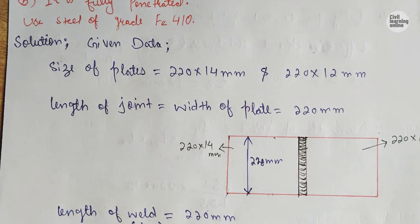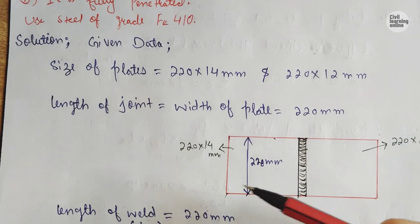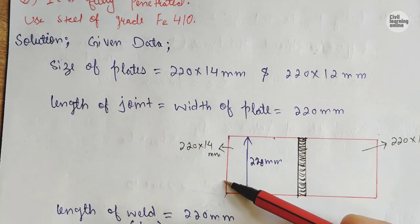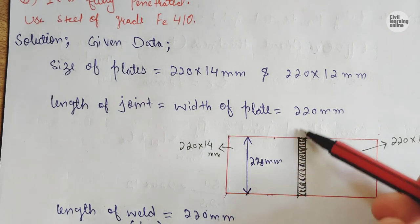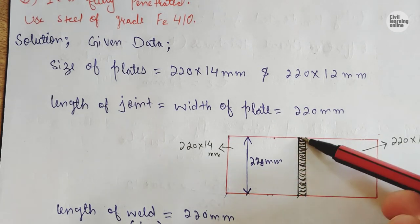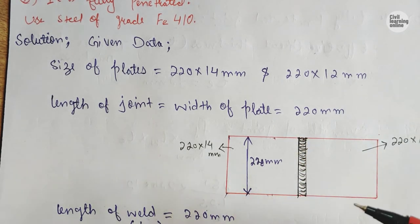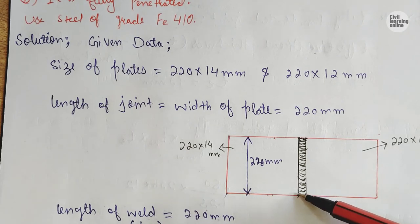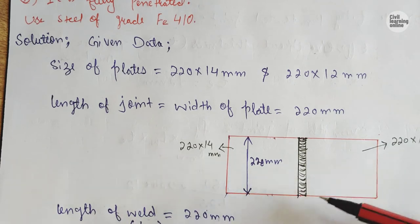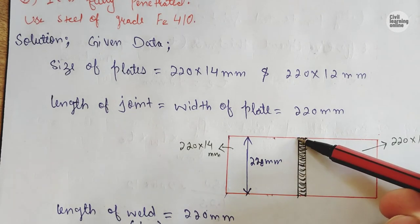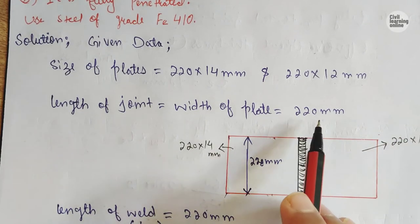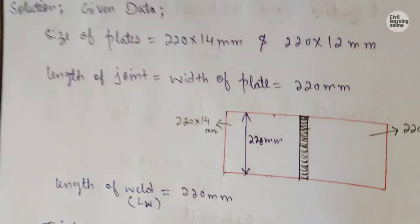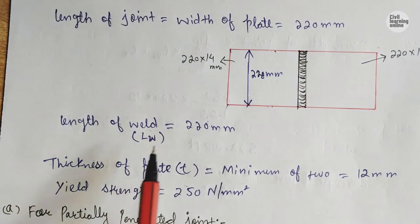Now we have to find the length of the joint. We have one plate and another plate being joined by the weld along this portion. The length of weld, denoted Lw, is equal to 220 mm — the width of the plates.